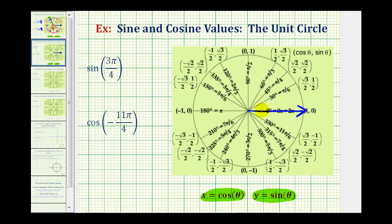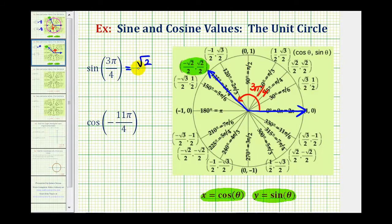We would rotate from here to here. Here's the terminal side of three pi over four radians, and here's the point where the terminal side intersects the unit circle. The x-coordinate is equal to negative square root two divided by two, and the y-coordinate is equal to square root two divided by two. Because we're looking for the sine function value, we want the y-coordinate, so this is equal to positive square root two divided by two.